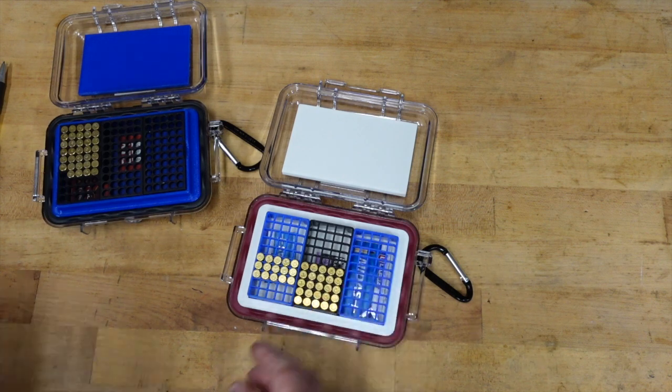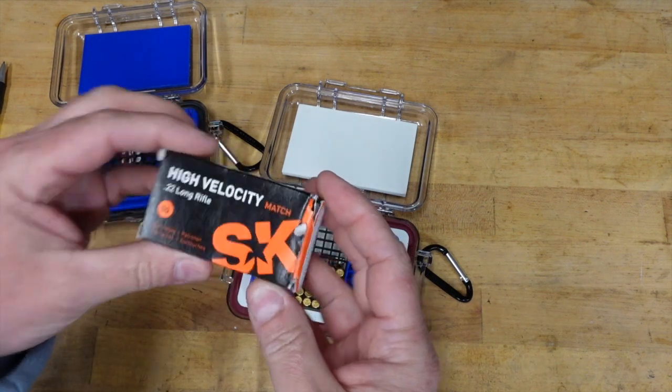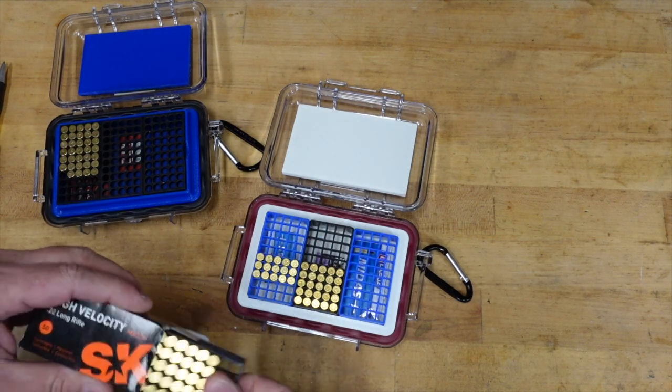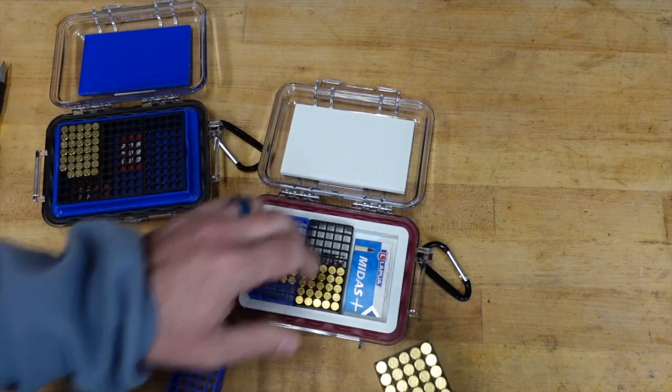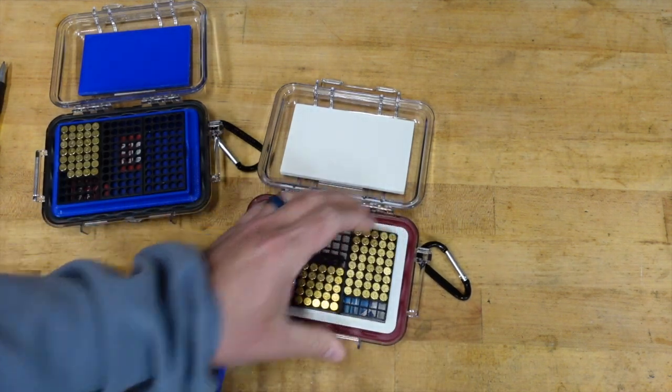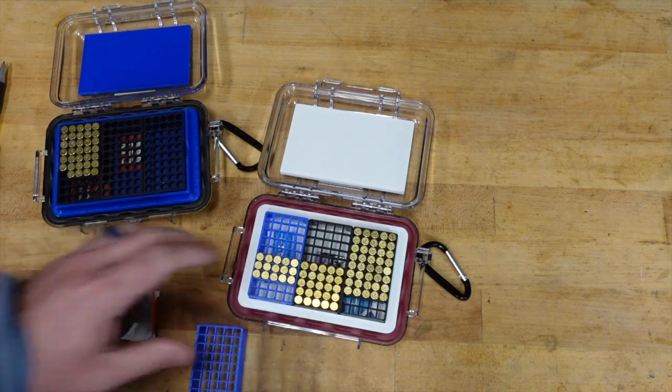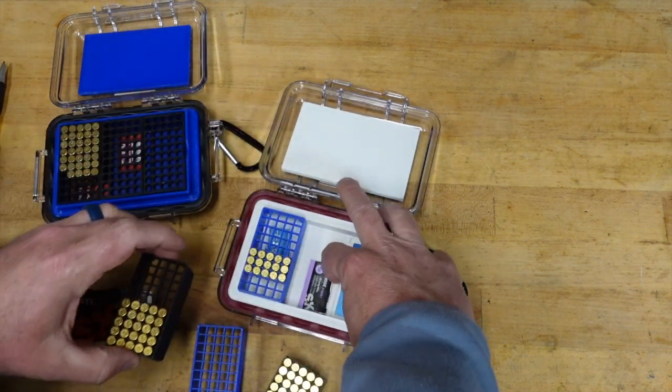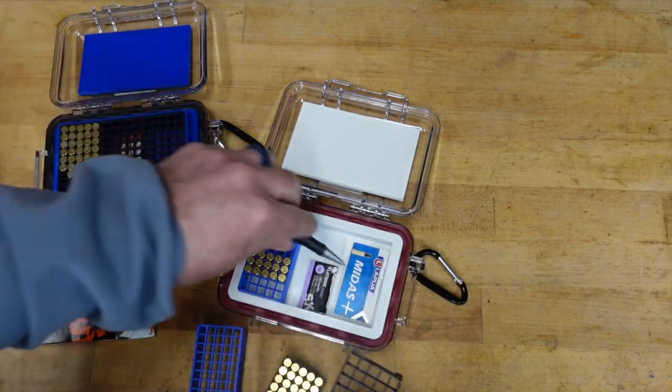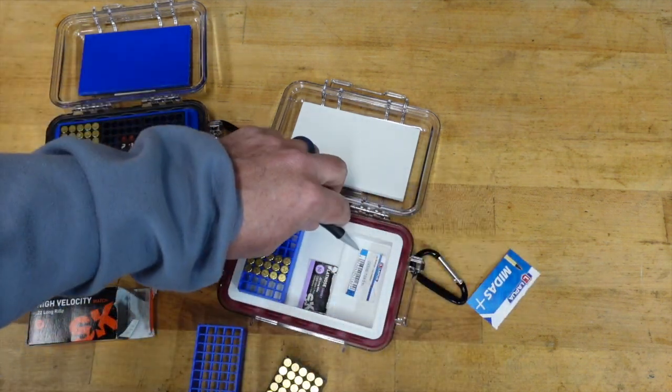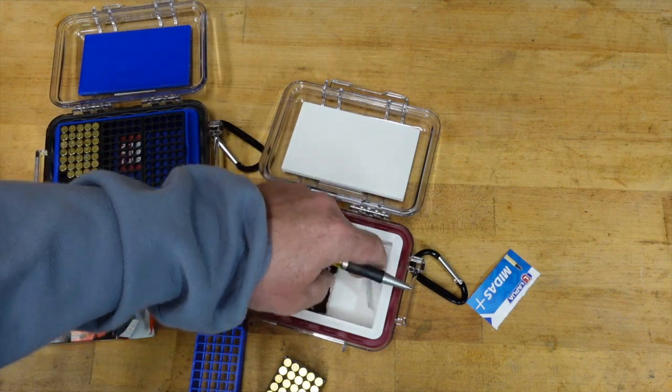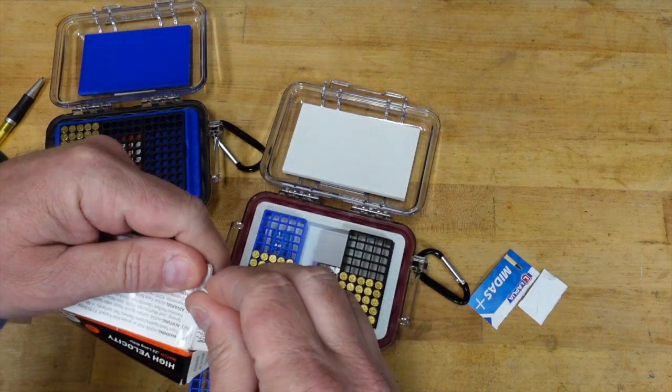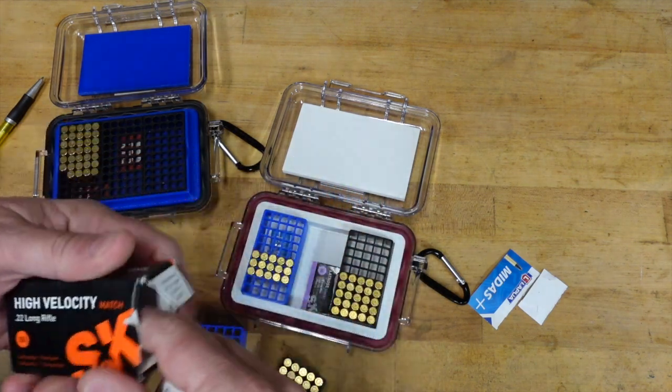It works the same way. In fact, here is a box of high velocity match that I have. For instance, I shot up this Midas plus, I'll pull that pack out in a second, but just drop that in and you're good to go. What I've been doing in this case is just putting a tear tab off of it. That had the lot number.